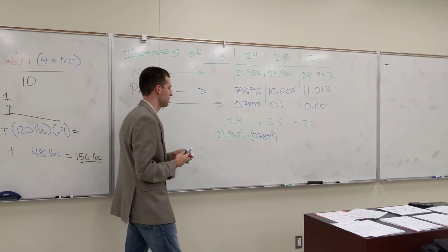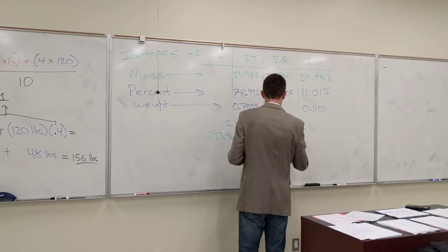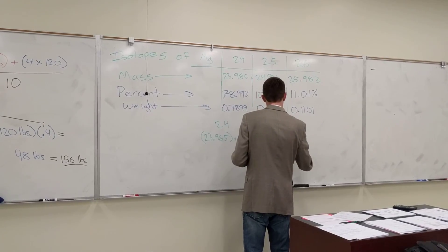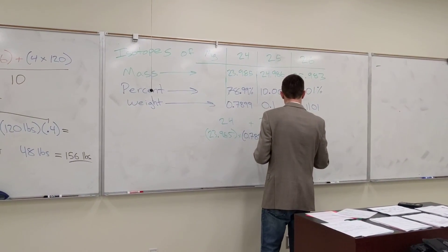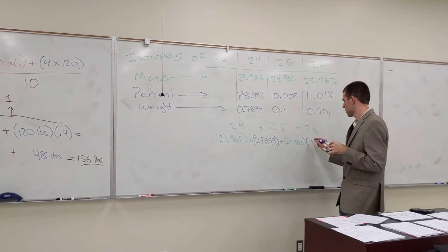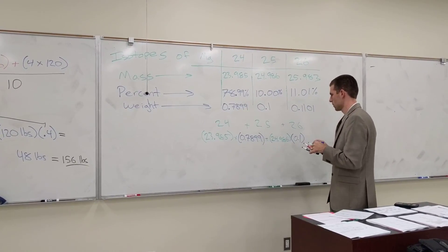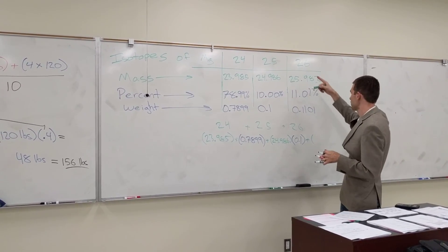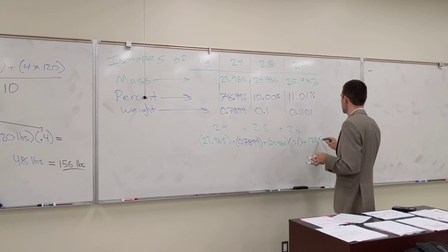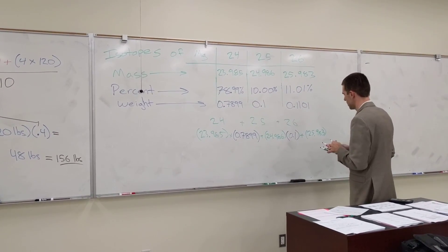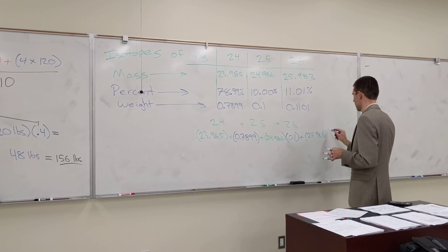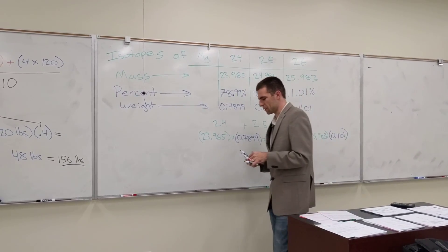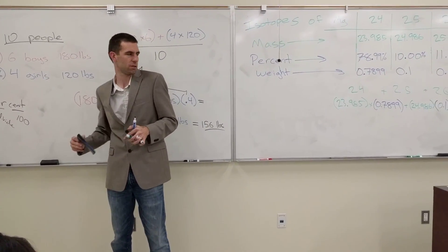Now, how about the 25 isotope? 24.986 times 0.1. And then we're going to add that finally to our 26 isotope, which is 25.983 times 0.1101. So now, order of operations, we're going to multiply first. So let's multiply all those.